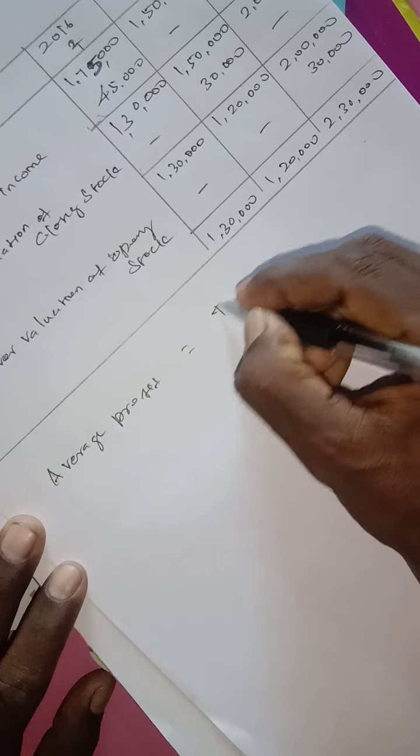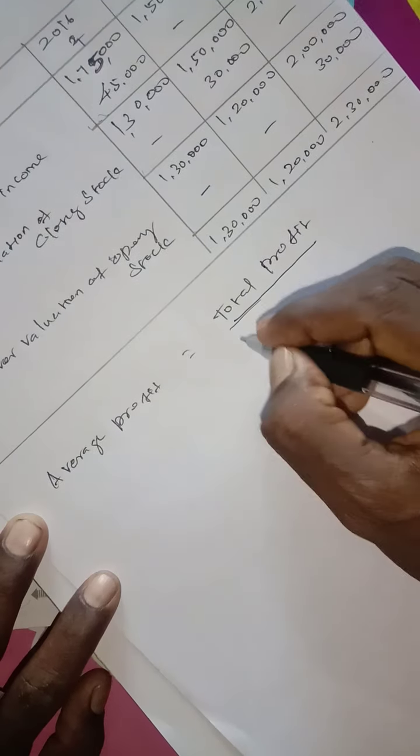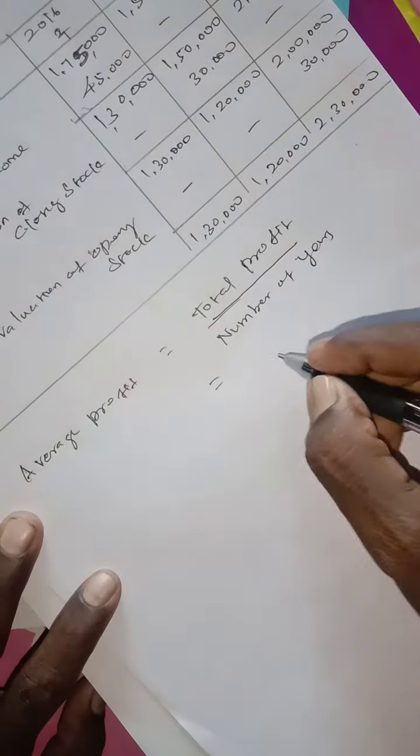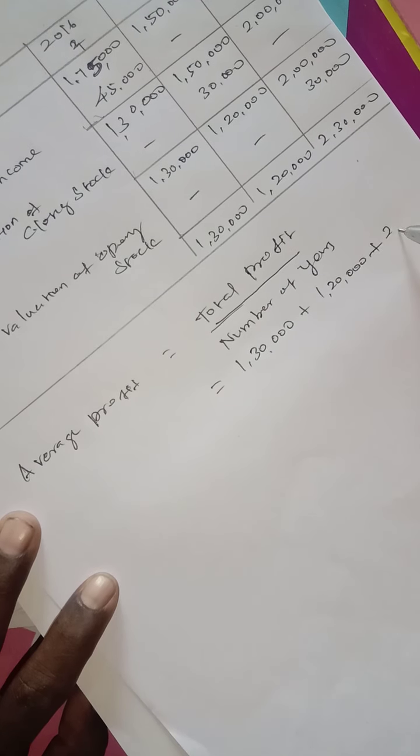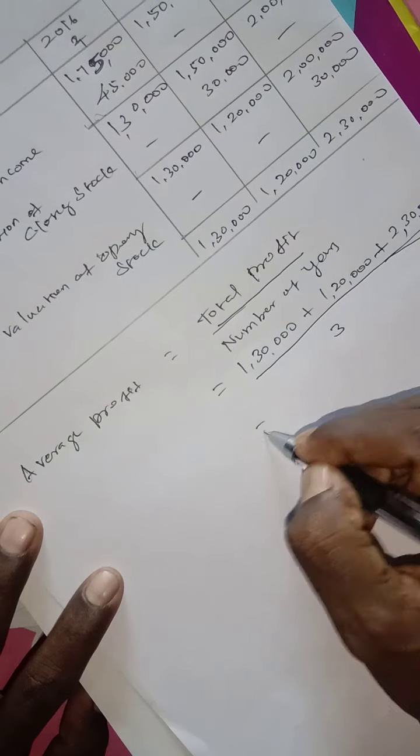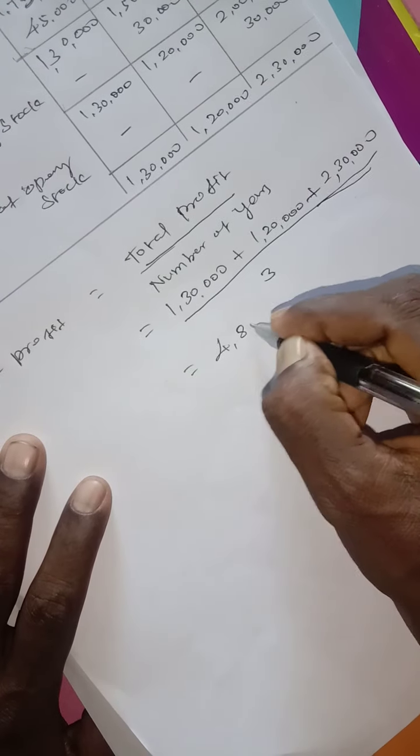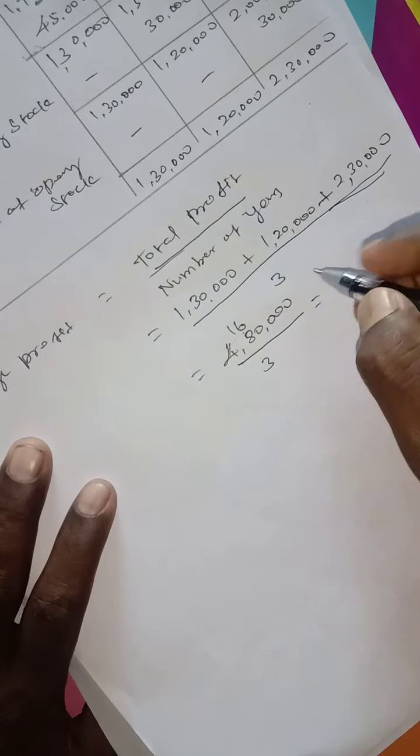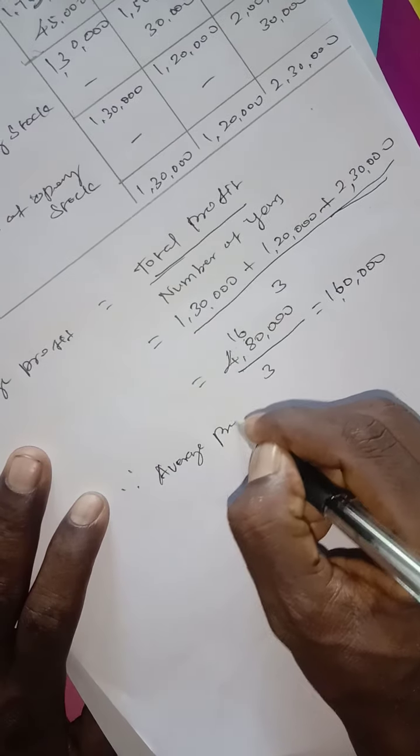The total profit is divided by the number of years. The total profit is ₹4,80,000 divided by the number of years.